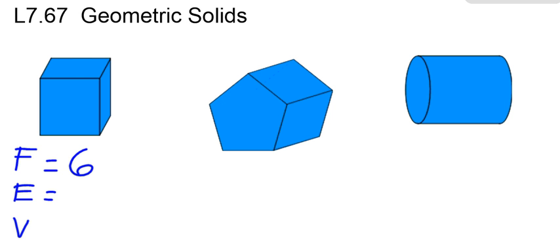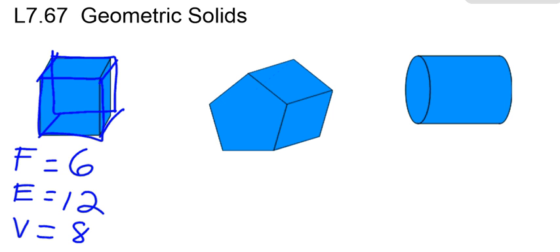From there we can talk about edges. Edges is where two faces come together. Four edges are opposite four more edges, and they're joined together by four edges, giving me a total of twelve edges.